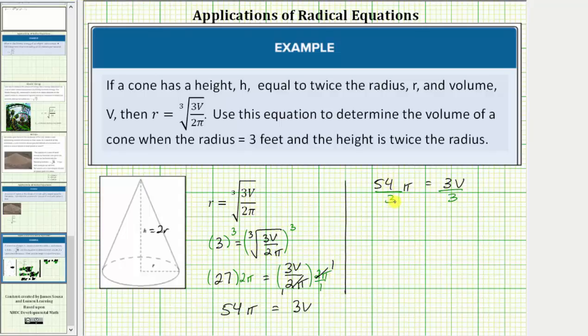Simplifying, 54 divided by three is equal to 18. The left side simplifies to 18 pi. On the right side, three divided by three simplifies to one. One times v is v.